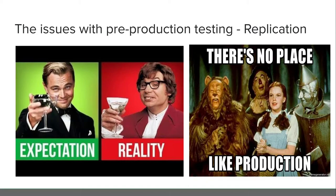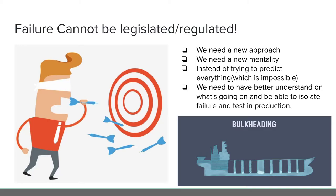The other issue is the replication problem in pre-production testing. We have this fallacy that we can replicate prod, but we cannot — we often have inferior hardware and don't have all the conditions and migrations happening in prod. Lots of people hate the pre-prod environment because it's always flaky. There's no place like production; that's where things happen and it's unique. Failure cannot really be legislated, so we need a new mentality. Instead of trying to predict — which is impossible — we need to have a better understanding of what's going on and be able to isolate failure in production.